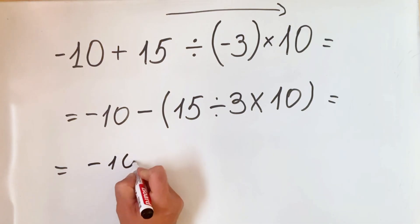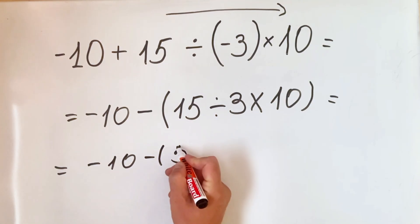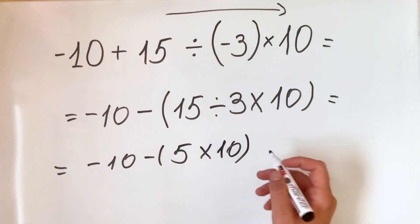15 divided by 3, we have 5, multiply by 10, and we have here 50.